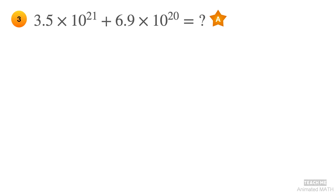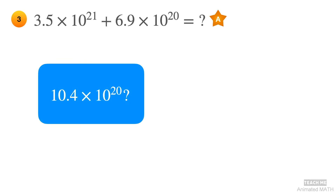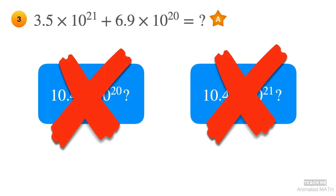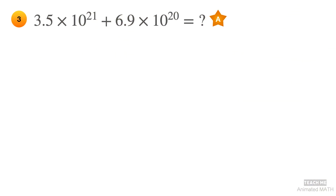This problem can be a little bit tricky. If your answer is either 10.4 times 10 to the 20th power, 10.4 times 10 to the 21st power, or 0.5 times 10 to the 21st power, then your answer is wrong. The exponents of the base 10s are not the same, which means you cannot simply add 3.5 and 6.9. Always remember the one special rule for adding and subtracting scientific notation.